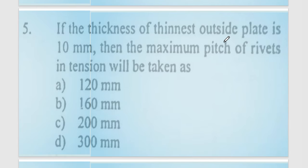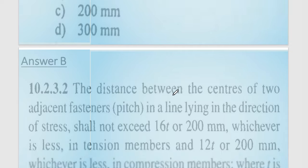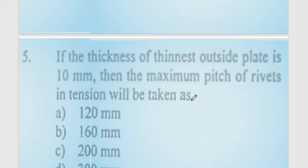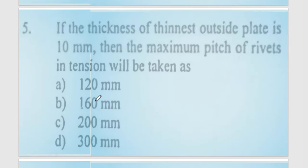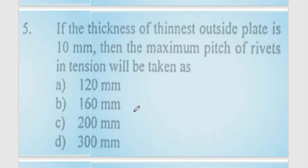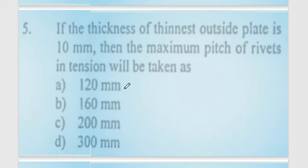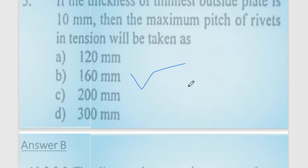Question number 5: if the thickness of the thinnest outside plate is 10 mm, what is the maximum pitch of rivets in tension? As per IS-800, the distance between centres of two adjacent rivets in a line along the direction of stress shall not exceed 16T or 200 mm, whichever is less. In compression it is 12T or 200 mm. For tension the answer is 16T, so option number B is correct.